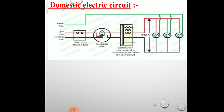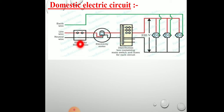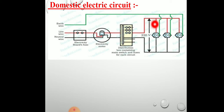Let us see how this electric circuit is connected in our homes. The red insulation is the live wire — also called the phase wire — having a potential of 220 volt. The black wire is the neutral wire, having 0 volt. The earth wire has green color insulation and is connected to the metal casing of the appliances.